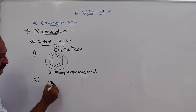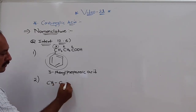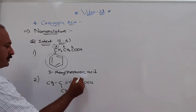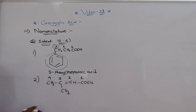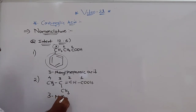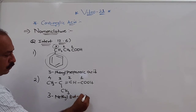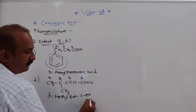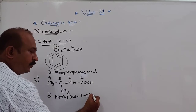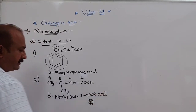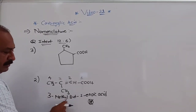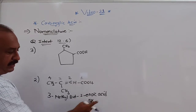The second question has CH3, C double bond, CH, single bond, C double bond H, and CH3. Numbering gives 1, 2, 3, and 4 carbons. At position 3, a methyl group is there. With 4 carbons and a double bond at position 2, it is but-2-en-oic acid. The E of EN is replaced with OIC acid. The IUPAC name is 3-methylbut-2-enoic acid.